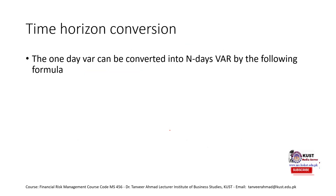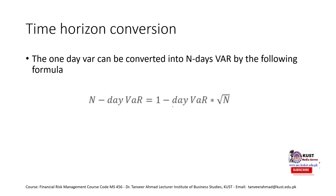A one-day VAR can be converted into an N-day VAR using the formula: N-day VAR = 1-day VAR × √N, where N is the number of days you want to convert to.